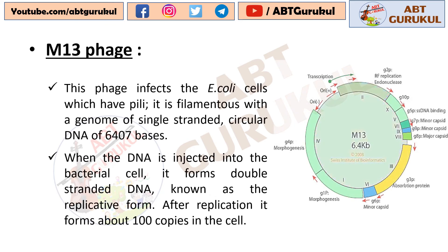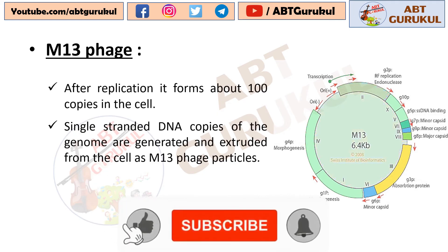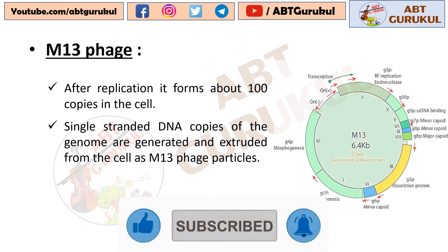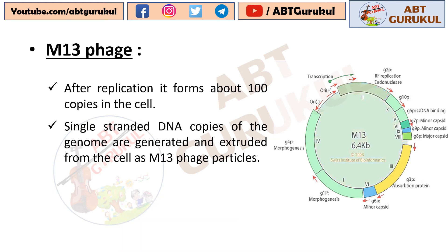Now let's see M13 Phage. This phage infects E. coli cells which have pili. It is filamentous with a genome of single stranded circular DNA of 6407 bases. When the DNA of M13 Phage is injected into the bacterial cell, it forms double stranded DNA known as the replicative form. After replication, it forms about 100 copies in the cell. Single stranded DNA copies of the genome are generated and extruded from the cell as M13 Phage particles.